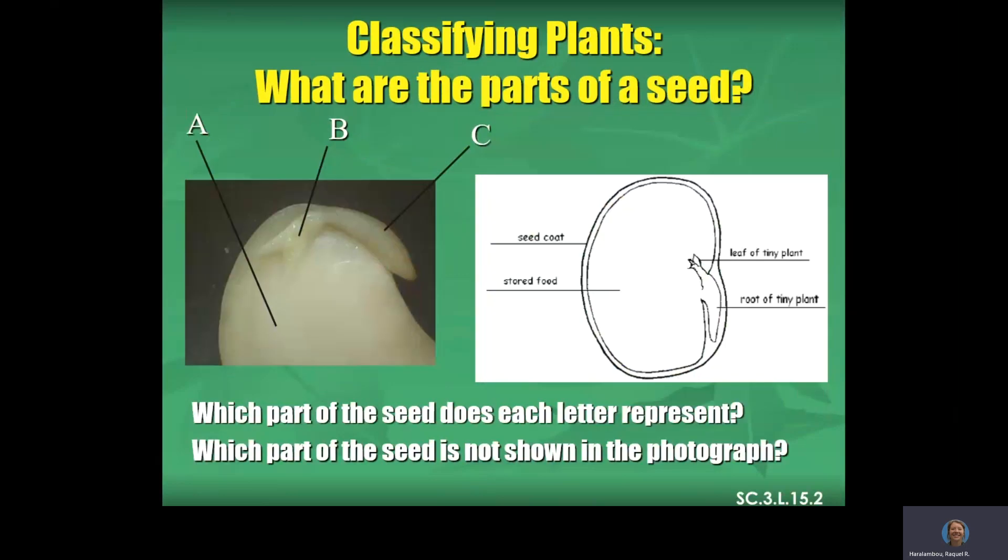So what are the parts of a seed? Which part of the seed does each letter represent? Which part of the seed is not shown in the photograph? So we have our seed coat, which is along the outside, which protects it. Just like if we're cold in the winter, we wear our coat. We have stored food on the inside. We have the leaf over here, the tiny little leaf. And then we have the root. So if I was talking about A, what would A be? Yes, talking about all that goodness in there, the stored food. Then B, good, yeah. What is B? Yeah, the little tiny leaf. And then what is C? What is this coming down here? Yes, it is the root. So what is not photographed? The actual seed coat. This looks like the seed has actually been out of its coat. So it might be germinating or growing.